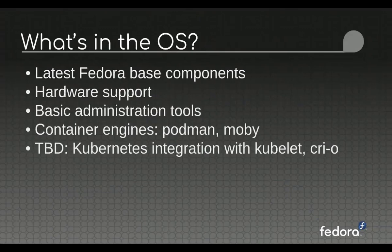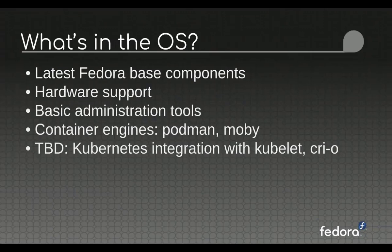What are we actually shipping in Fedora CoreOS? It's Fedora-based components: kernel, systemd, Podman and Moby for container engines, and whatever software is necessary for basic hardware support. We are shipping basic administration tools — you can SSH into the node and run journalctl and similar. A little further down the road, we're talking about the best way to ship or provide access to things like kubectl and CRI-O, but we're not quite there yet.